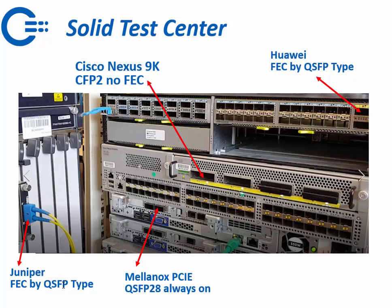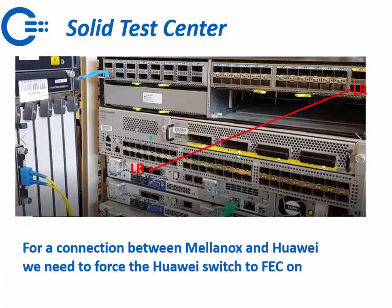Here is a sample from our Solid Optics test center. We have 100 Gigabit devices: a Juniper where FEC is based on the CFP module type itself; a Mellanox 100 Gigabit card which always has FEC on; a Huawei switch which can be turned on or off depending on the optic type such as LR or SR; and a Cisco Nexus 9K which uses CFP2s and does not have FEC.